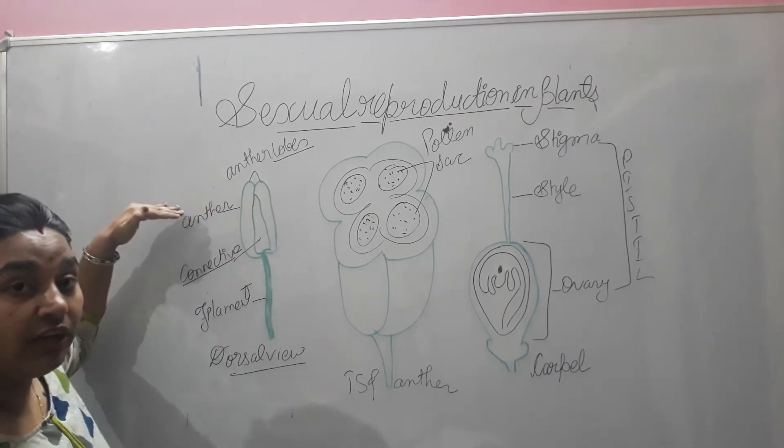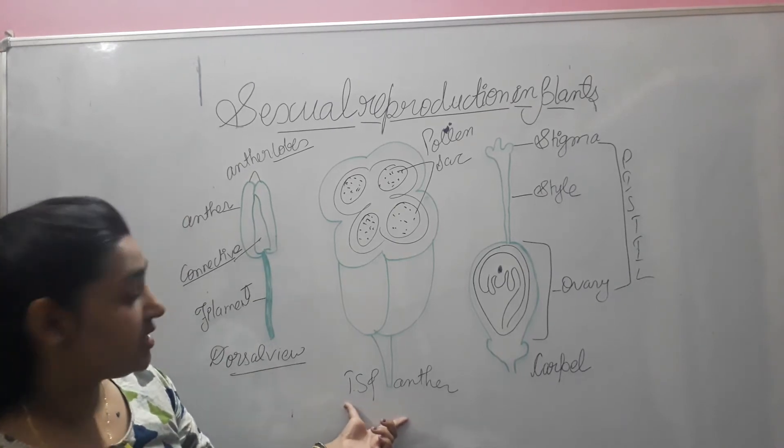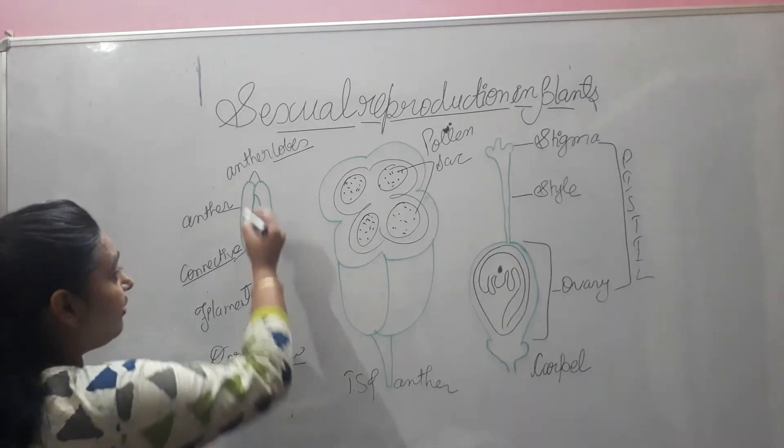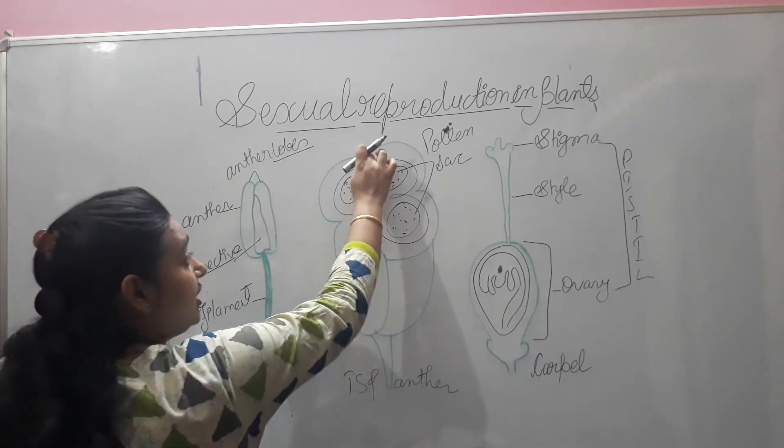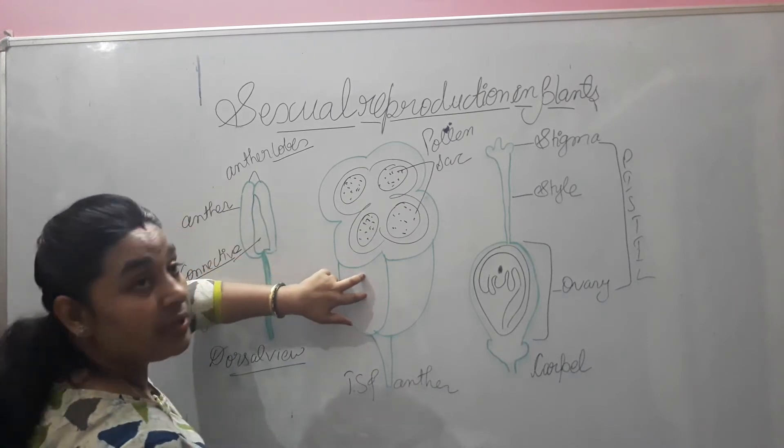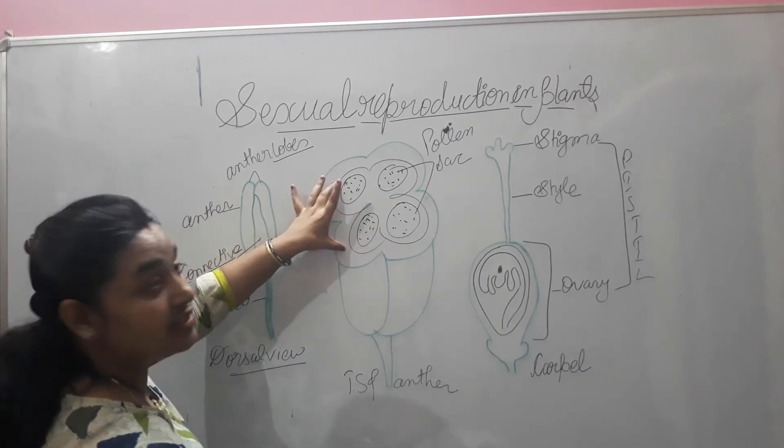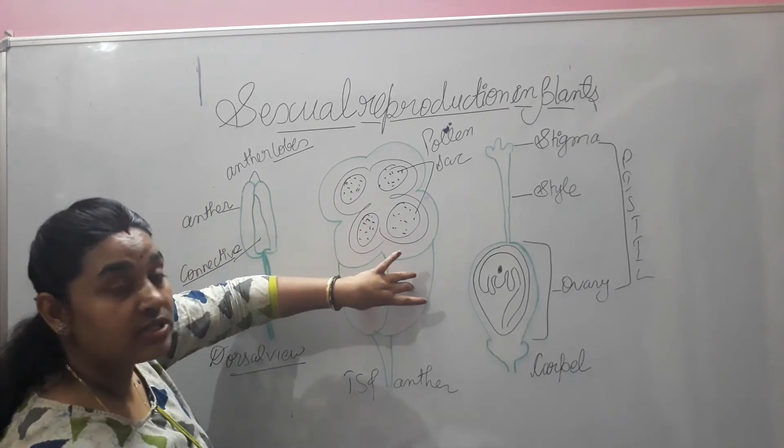When you dissect it or cut it, you will see this kind of structure called TS of anther. When you cut it from here, you will see that each lobe has two sacs inside. So each lobe has two sacs.